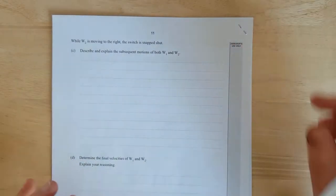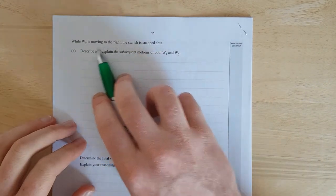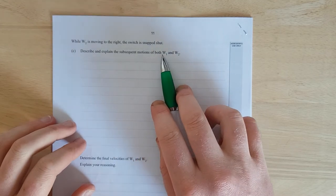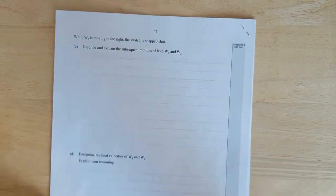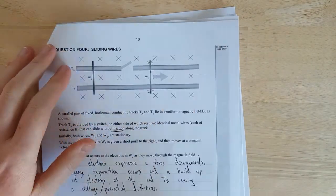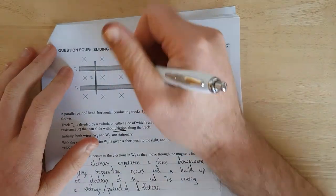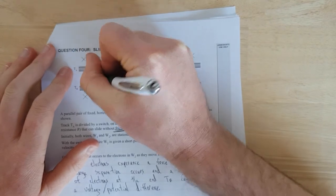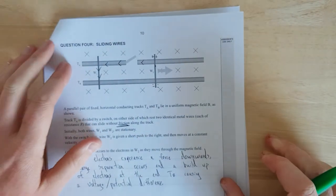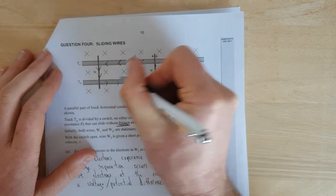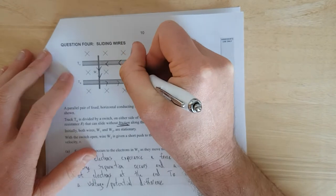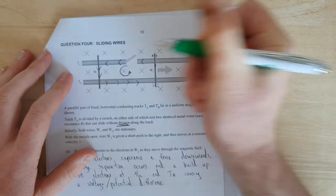Question C. While W2 is moving to the right, or wire 2 is moving to the right, the switch is snapped shut. Describe and explain the subsequent motions of both wire 2 and wire 1. So now, if we flip over the page, we are going to have a flow of current from positive to negative, conventional current. So the current's going to go like this, down wire 1, if you can sort of see that. Back along. This is just conventional current, not the flow of electrons. So it's going to flow anticlockwise.